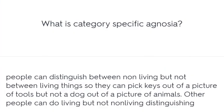What is category-specific agnosia? People can distinguish between non-living things but not between living things, so they can pick keys out of a picture of tools but not a dog out of a picture of animals. Other people can do the opposite — distinguish living but not non-living things.